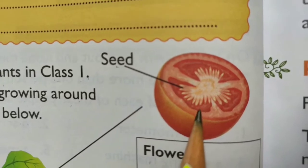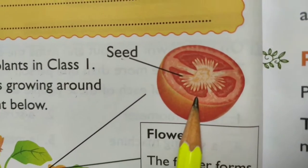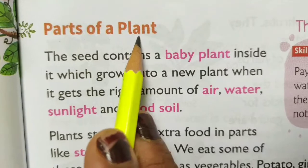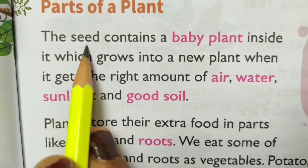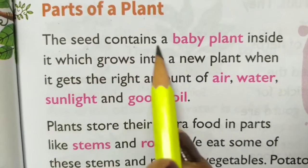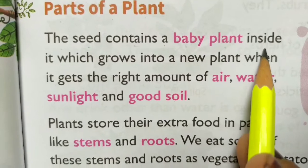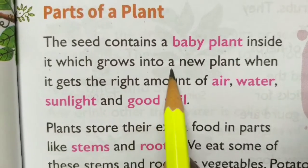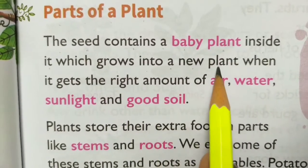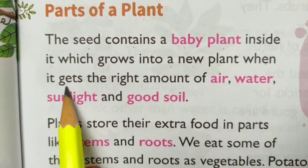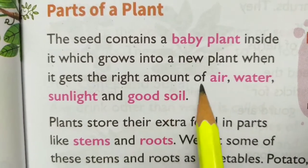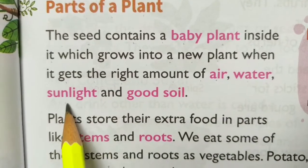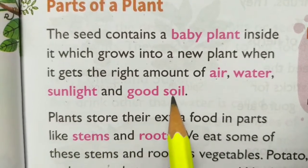Seed. The seed contains a baby plant inside it, which grows into a new plant when it gets the right amount of air, water, sunlight and good soil.